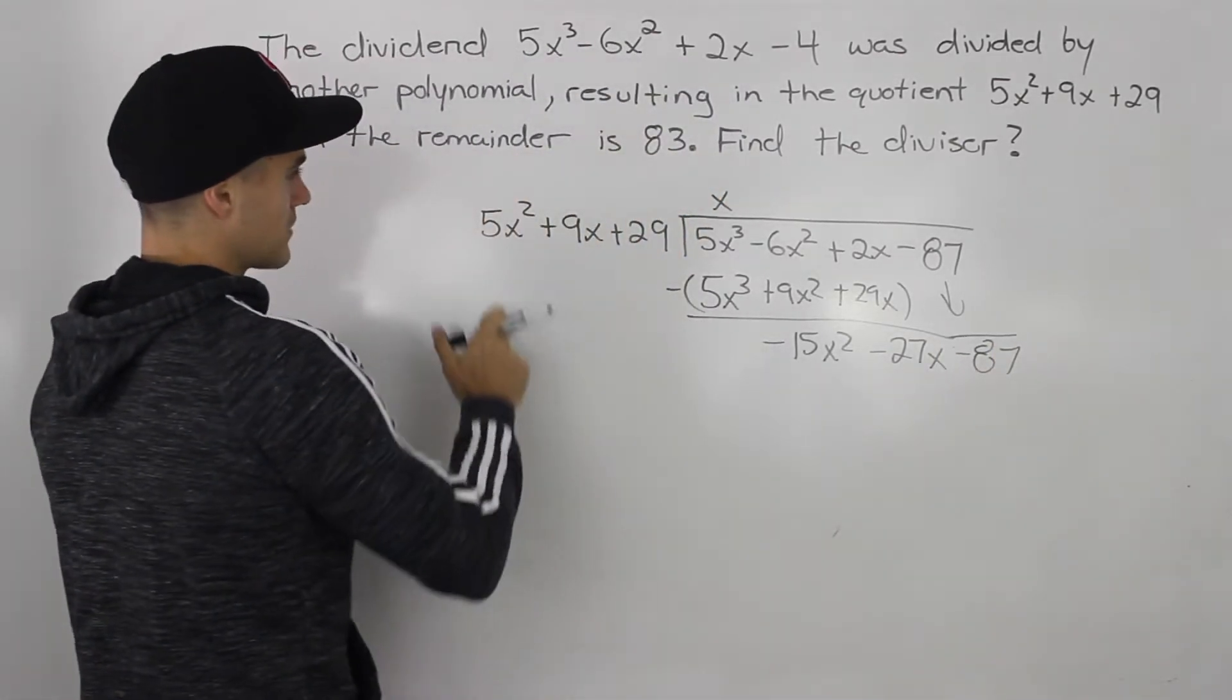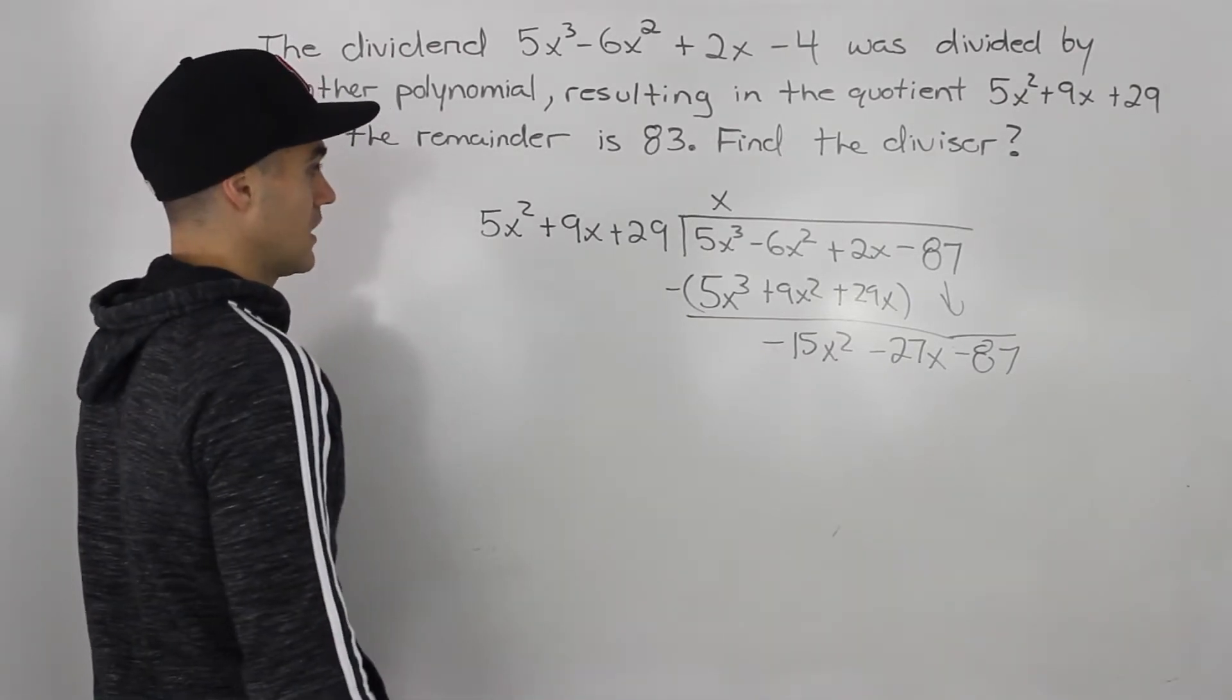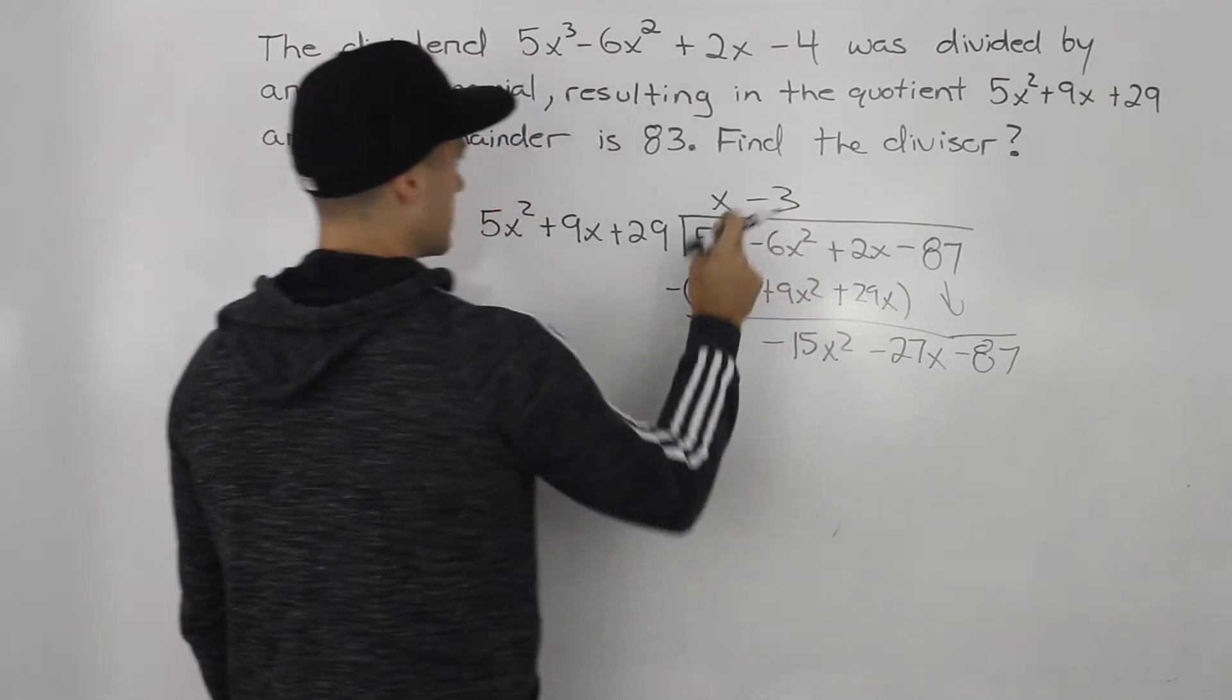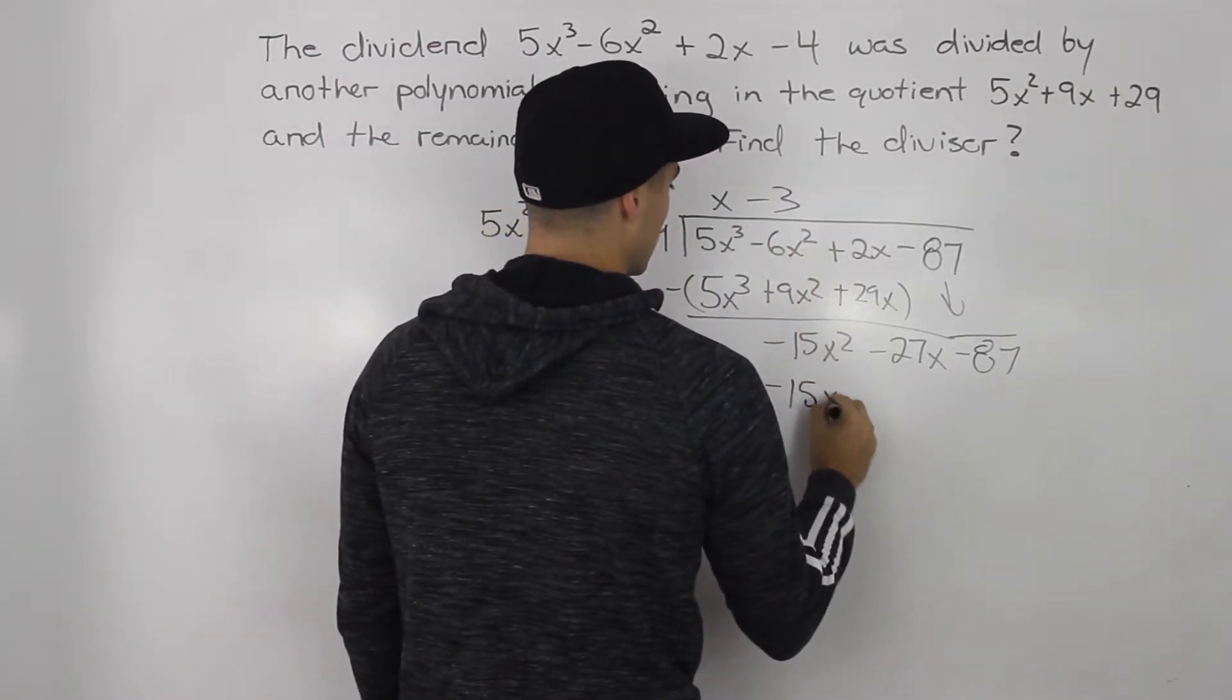Okay? So how many times does 5x squared go into negative 15x squared? Negative 3 times. So multiply the negative 3 by all of the terms in the divisor.